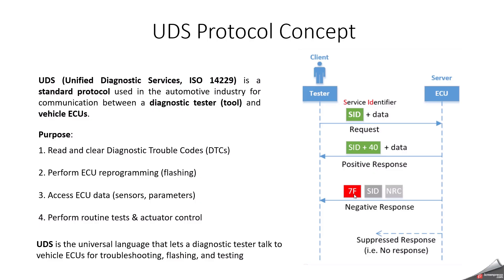The negative response is identified with 0x7F. The purpose of UDS Protocol is mainly to read and clear diagnostic trouble codes — that is where services 0x19 and 0x14 come in. It is used to perform ECU reprogramming, that is flashing, and to access ECU data, sensors, or parameters via service 0x22, and to perform routine tests and actuator control. In summary, UDS is a universal language that lets a diagnostic tester talk to a vehicle ECU for troubleshooting, flashing, and testing.